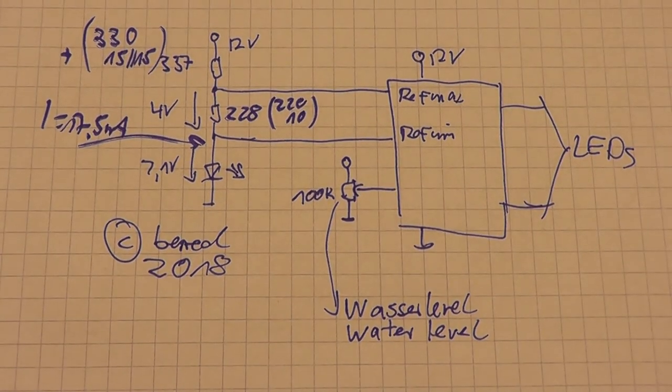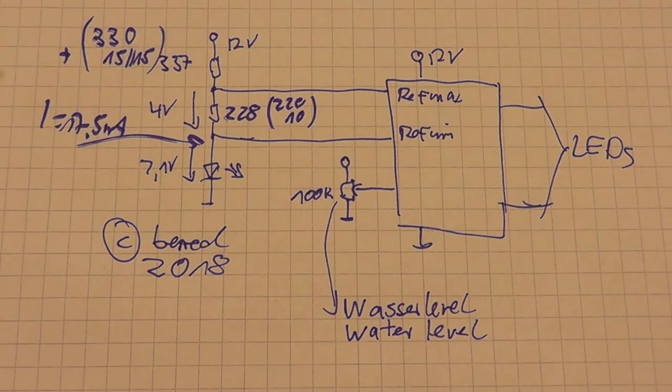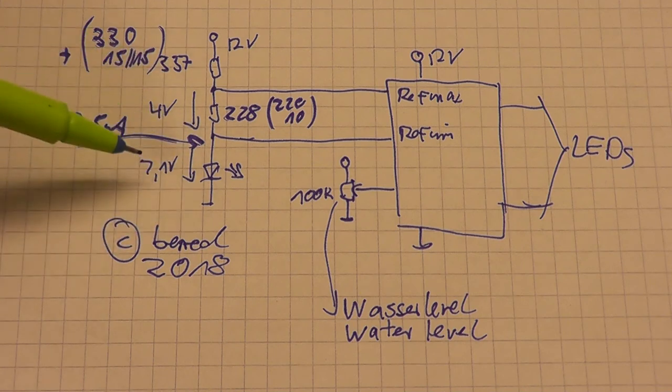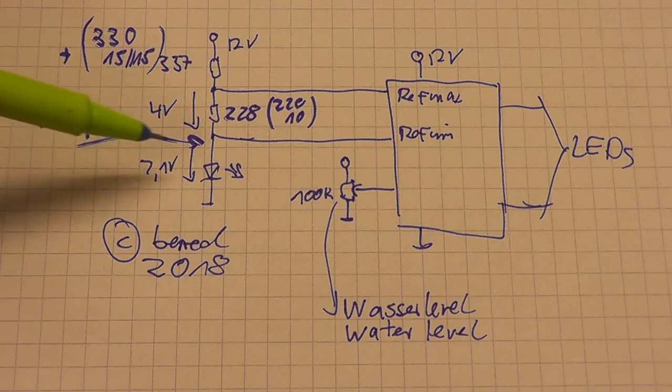In order to get a 2.1 volt reference, I took a green LED because the green LED has a forward voltage of about 2 volts. What I did is I measured the current through the LED when a forward voltage of 2.1 volts is there, and I got in my case 17.5 milliamps.